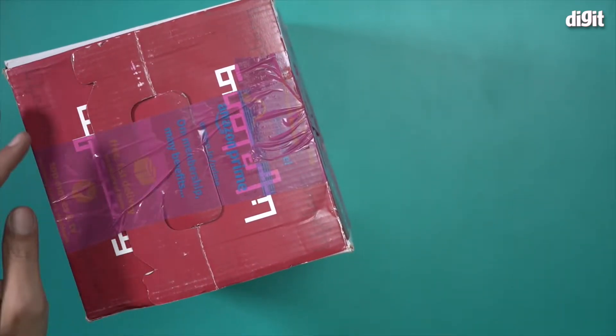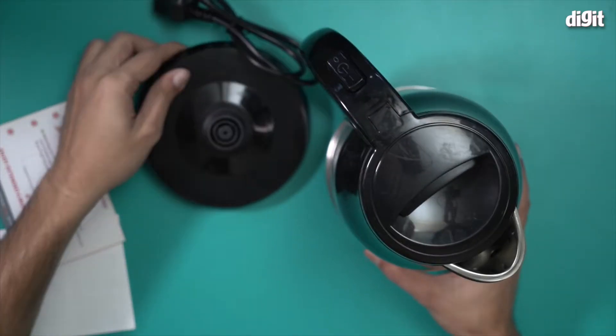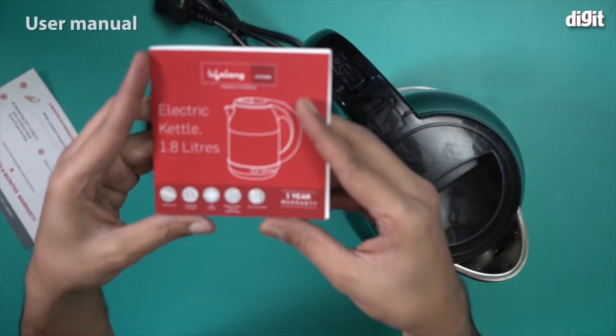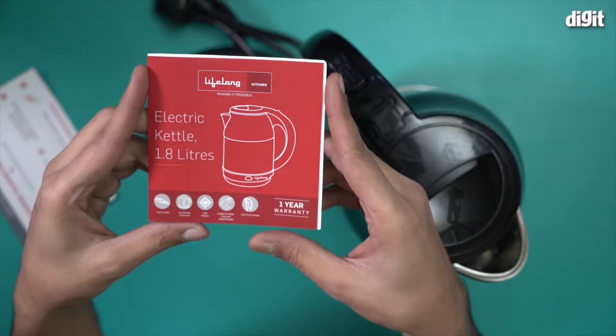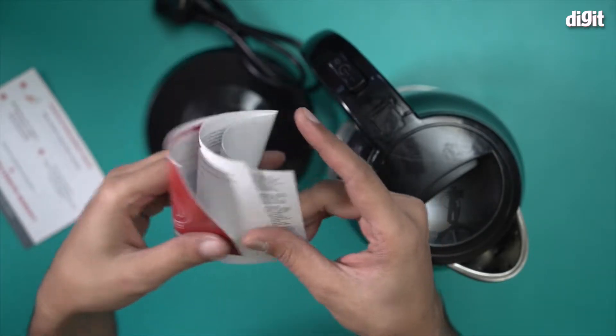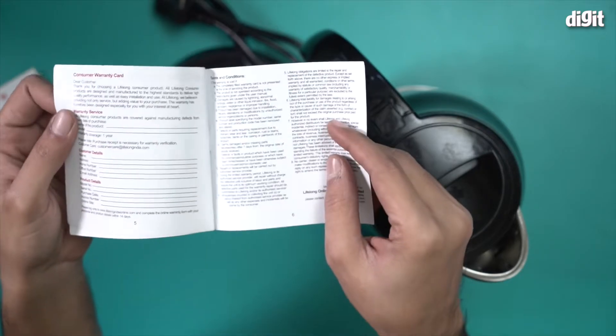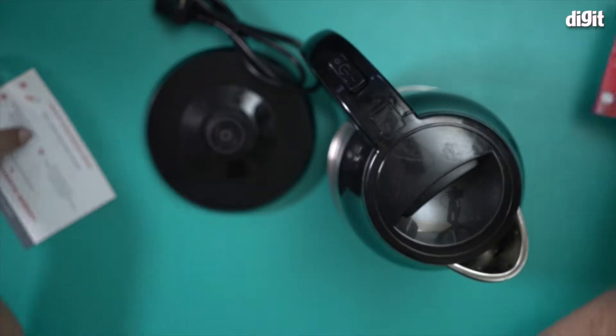So there you go, this is what you'll find inside the box. We have a user manual for the 1.8 liter electric kettle from Lifelong with all the features mentioned, all the safety instructions, and also a warranty card. This includes a six-month extended warranty card from Lifelong.